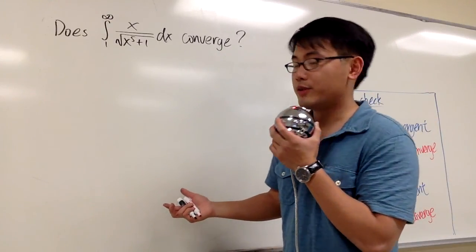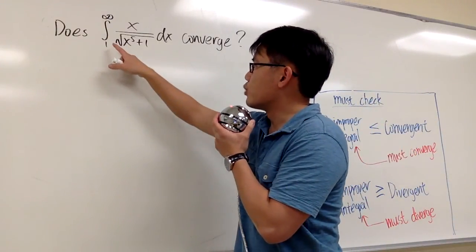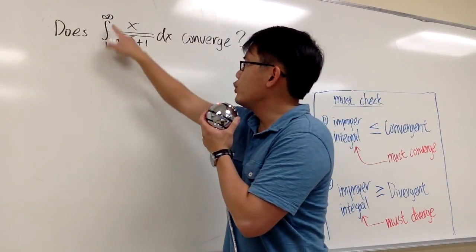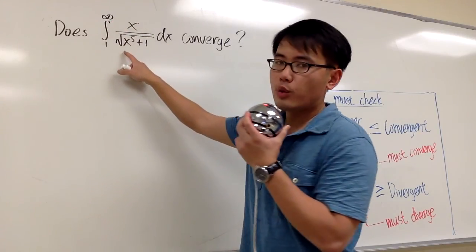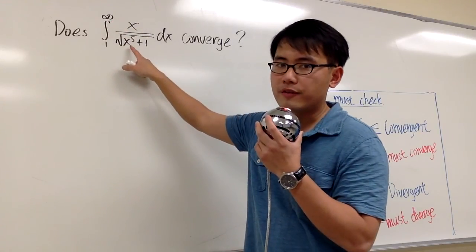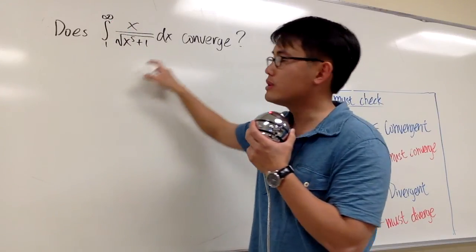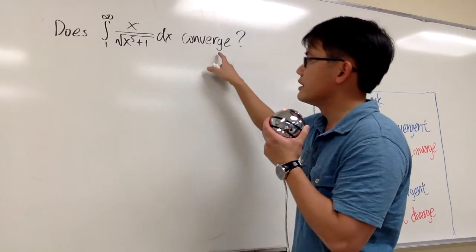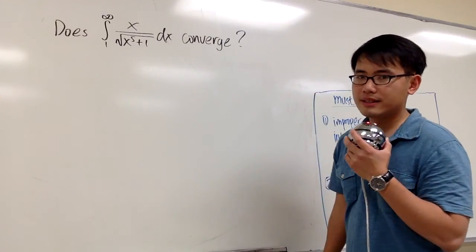So this is the question that we would like to answer. Does the improper integral — the integral from 1 to infinity of x over the square root of x to the 5th plus 1 dx — does that converge or not?